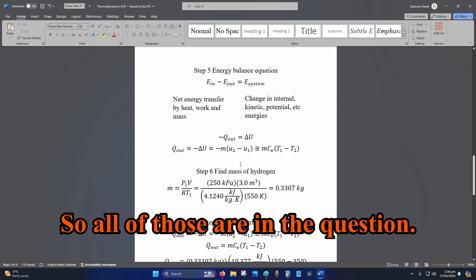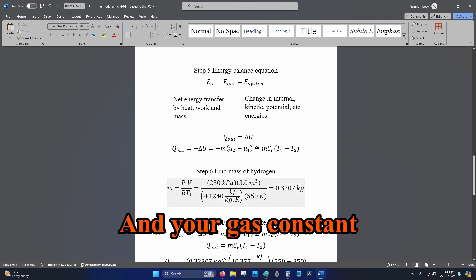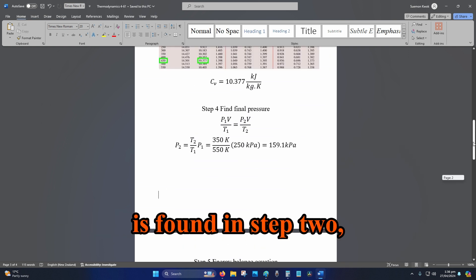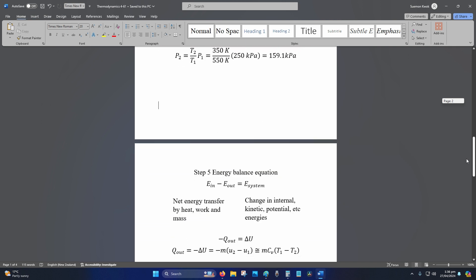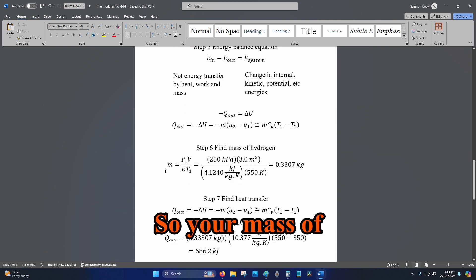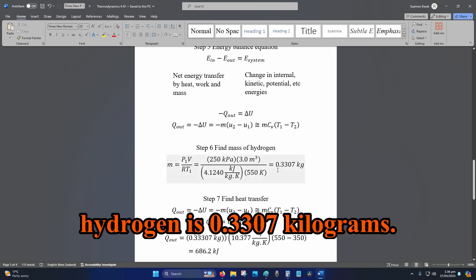Your gas constant is found in step 2, in table A-1. Your mass of hydrogen is 0.3307 kg.